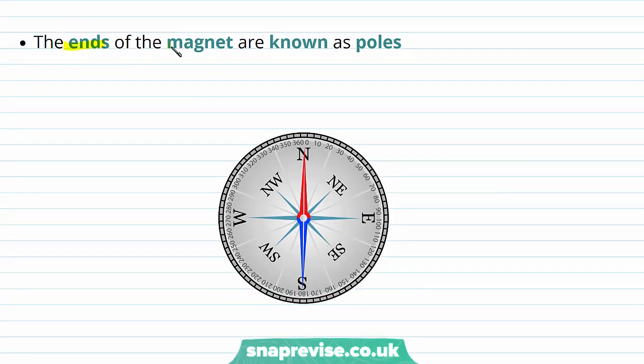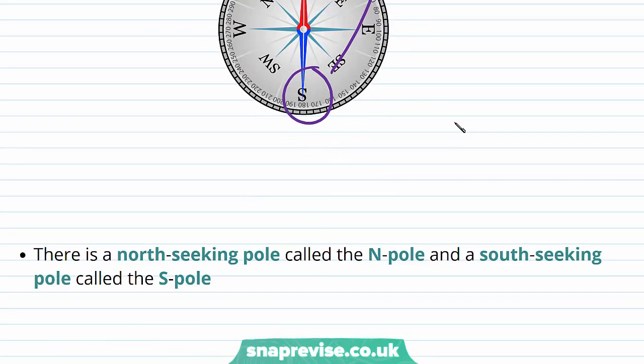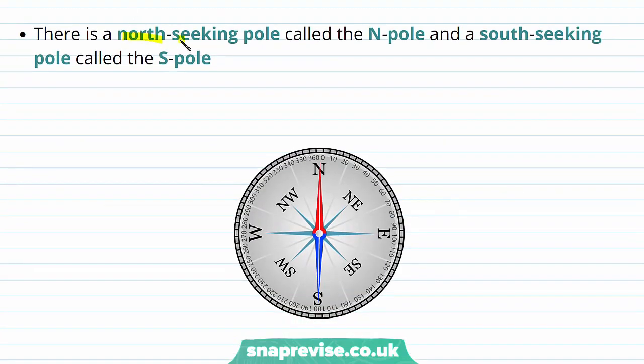The ends of the magnet are known as poles. So this end here and this end here are the poles of the magnet. There's a north-seeking pole called the north pole and a south-seeking pole called the south pole. You can see that the north-seeking pole is labelled with an N here, and the south-seeking pole is labelled with an S.